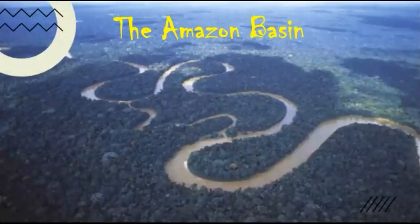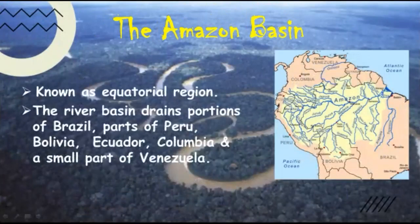This is a map of the Amazon Basin. This region lies very close to the equator, that is 10 degrees north and 10 degrees south, which is why it is known as the equatorial region. The Amazon River flows through here, and there are many tributaries that join it, forming the Amazon Basin. This basin also drains some portions of Brazil, parts of Peru, Bolivia, Ecuador, Colombia, and a small part of Venezuela.